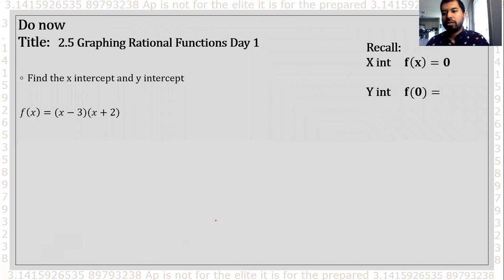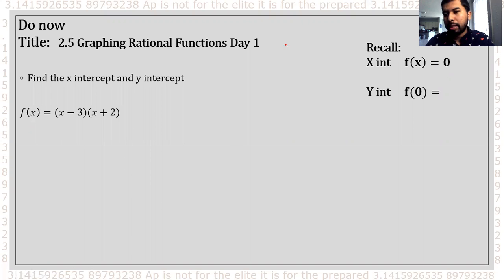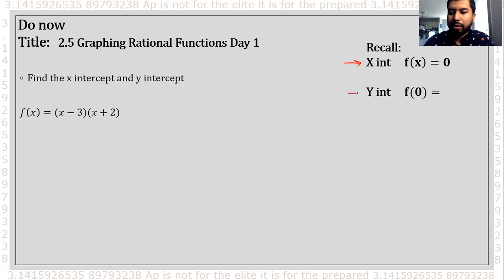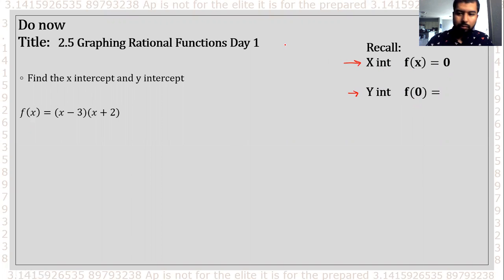Go ahead and try this problem out. I want you to find the x-intercepts and y-intercepts. If you do not remember how to find the x-intercepts, the zeros is when you set the function equal to zero and solve for x. When you find the y-intercepts, that's when it touches the y-axis — when x is zero, you substitute x equals zero. Go ahead and pause the video and give these a try.